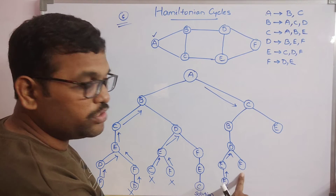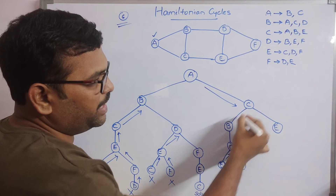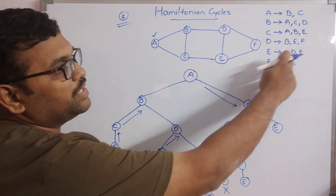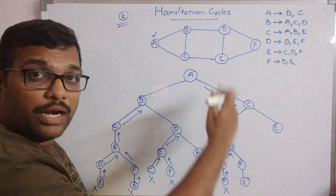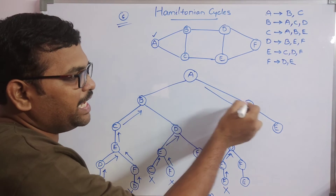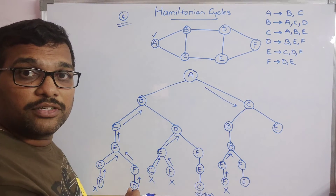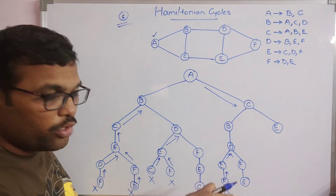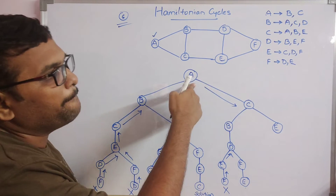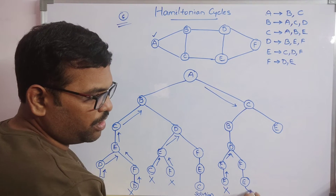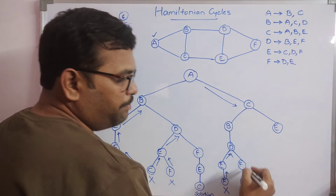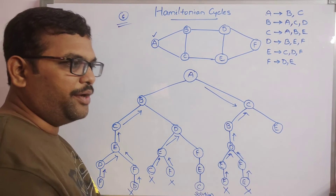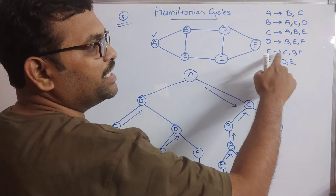Backtrack and go with alternate: from F, edges D and E — D is visited, E is not. Go to E. In path A-C-B-D-F-E: check total nodes — A, C, B, D, F, E — six nodes visited. This may lead to a Hamiltonian cycle. Check edge from E to A — E does not have an edge to A, so not feasible. Backtrack again. Next alternative: path A-C-E. From E, edges C, D, F — C is visited, so explore D and F.